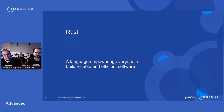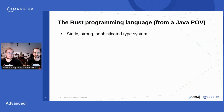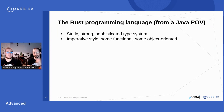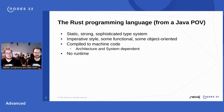Rust: a programming language empowering everyone to build reliable and efficient software. Coming from the Java point of view — we work mostly with Java at Neo4j — Rust is a statically typed language with a strong, sophisticated type system. You mostly write in the imperative style, with some functional and object-oriented aspects. It compiles directly to machine code, not bytecode, which means it's dependent on your architecture and system, and there is no runtime environment equivalent.